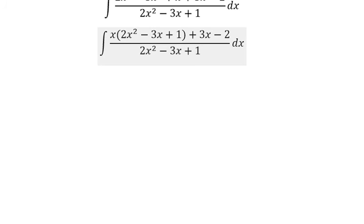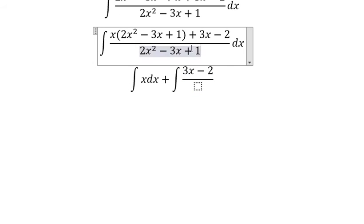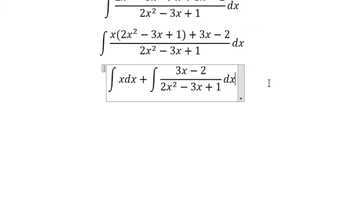Because this can divide the denominator, we get the integral of x times (2x² minus 3x plus 1) plus 3x minus 2, over 2x² minus 3x plus 1, dx.